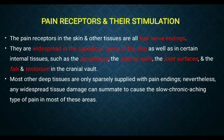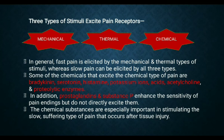When tissue damage occurs, slow chronic aching type of pain results. Pain receptors can be excited by three types of stimuli: mechanical stimuli, thermal stimuli, and chemical stimuli. Fast pain is elicited by mechanical and thermal stimuli, whereas slow pain can be elicited by all three types — mechanical, thermal, and chemical stimuli.